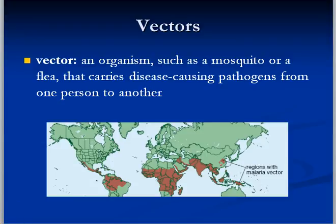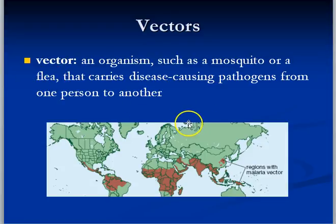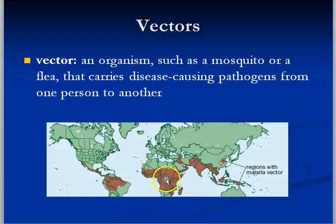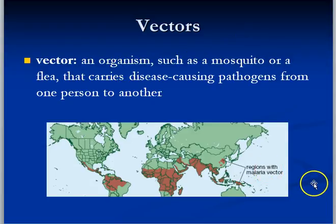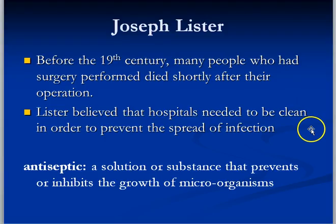There are disease-carrying organisms called vectors. The most common would be mosquitoes; in the past with the plague we had fleas. These organisms don't necessarily get infected and die, but they pass disease on to other organisms. In the case of malaria, the mosquito gets infected by the malaria pathogen, and when it bites people, the pathogen enters the circulatory system, infects red blood cells, grows and multiplies until they burst — causing weakness and fatigue due to lack of red blood cells. The mosquito is the vector, not the malaria itself.